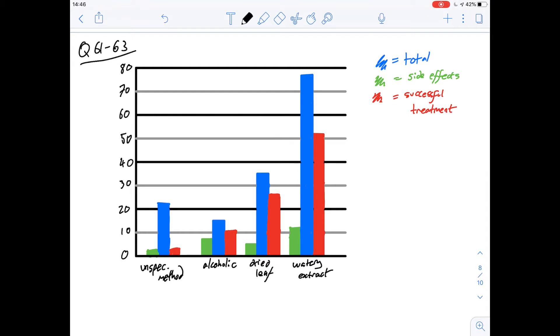It says according to the data provided an advantage of the dried leaf preparation over the watery extract is what? So we're going to be comparing these two. So what can we tell from the graph here which would be useful?